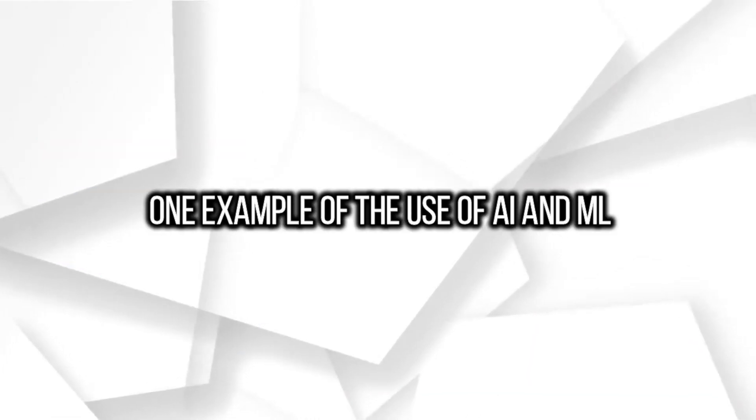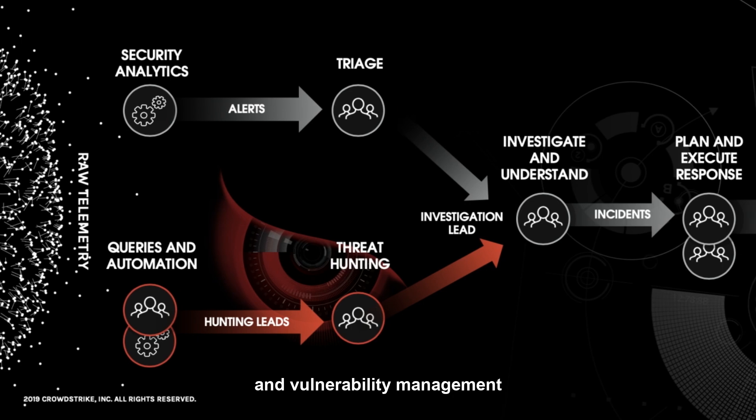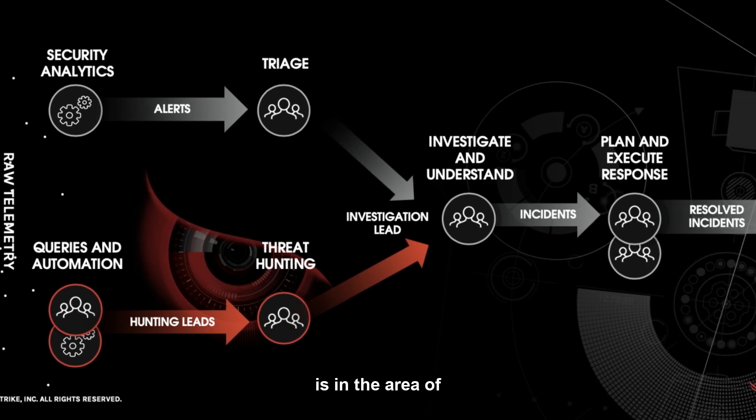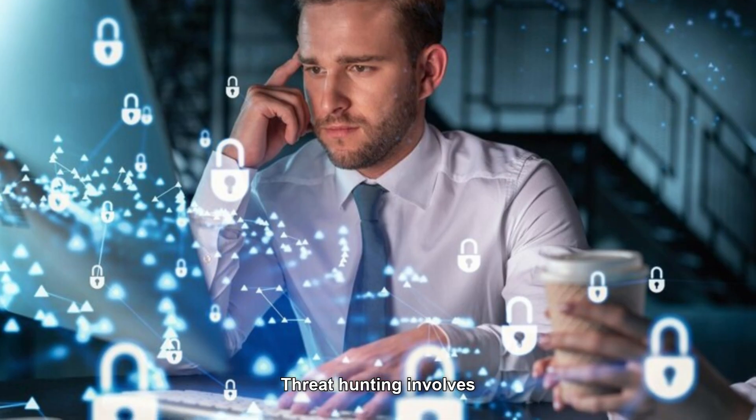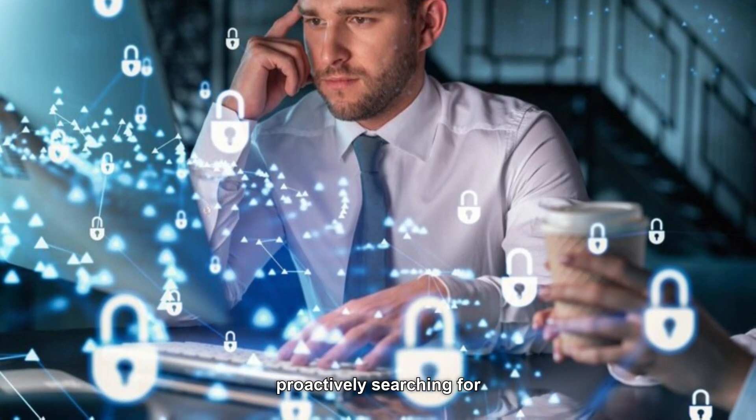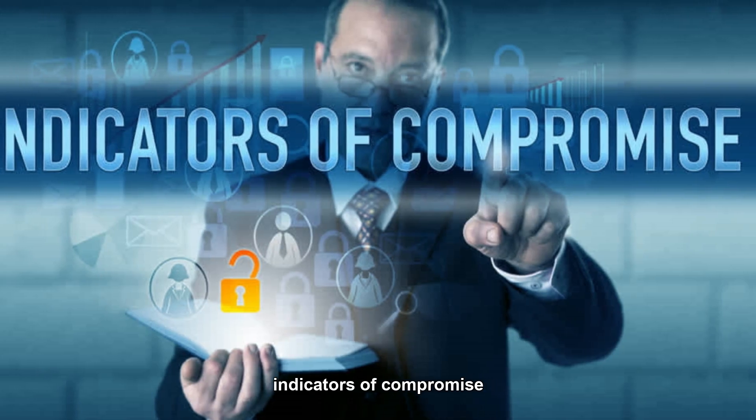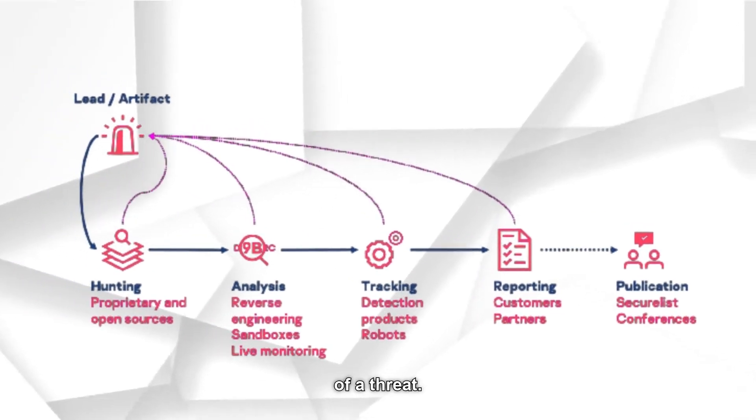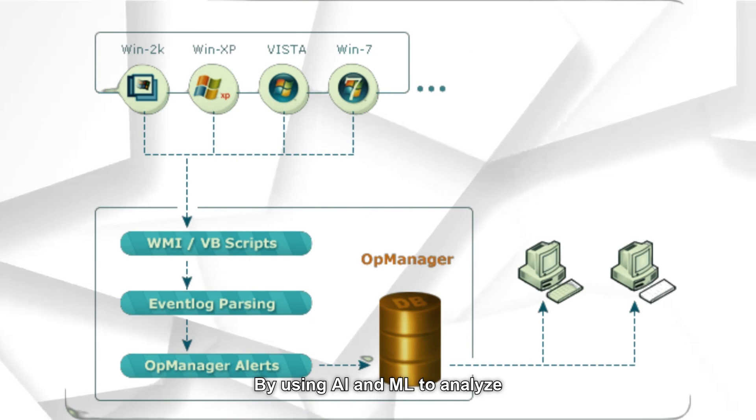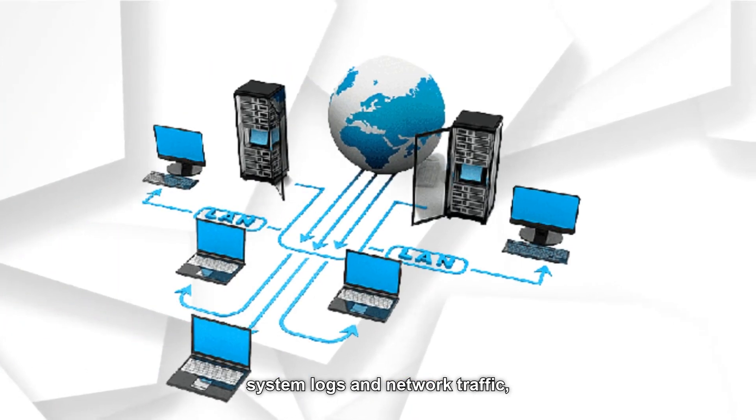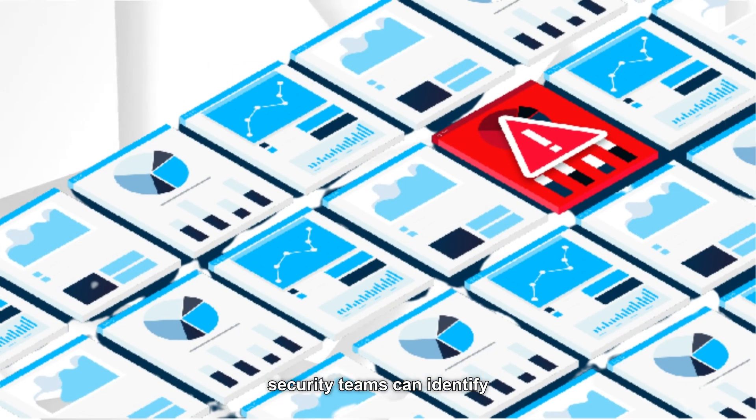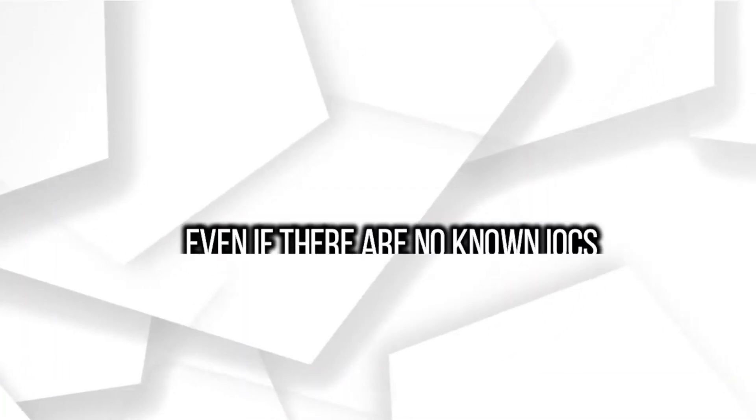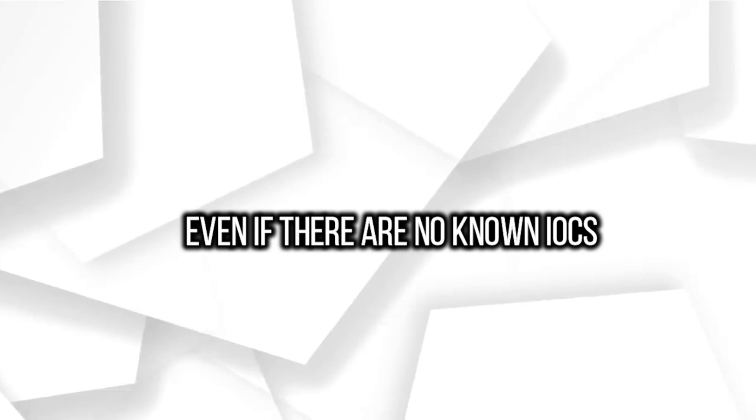One example of the use of AI and ML in vulnerability management is in the area of threat hunting. Threat hunting involves proactively searching for indicators of compromise, IOCs, that may indicate the presence of a threat. By using AI and ML to analyze system logs and network traffic, security teams can identify patterns and anomalies that may indicate the presence of a threat even if there is no known IOCs.